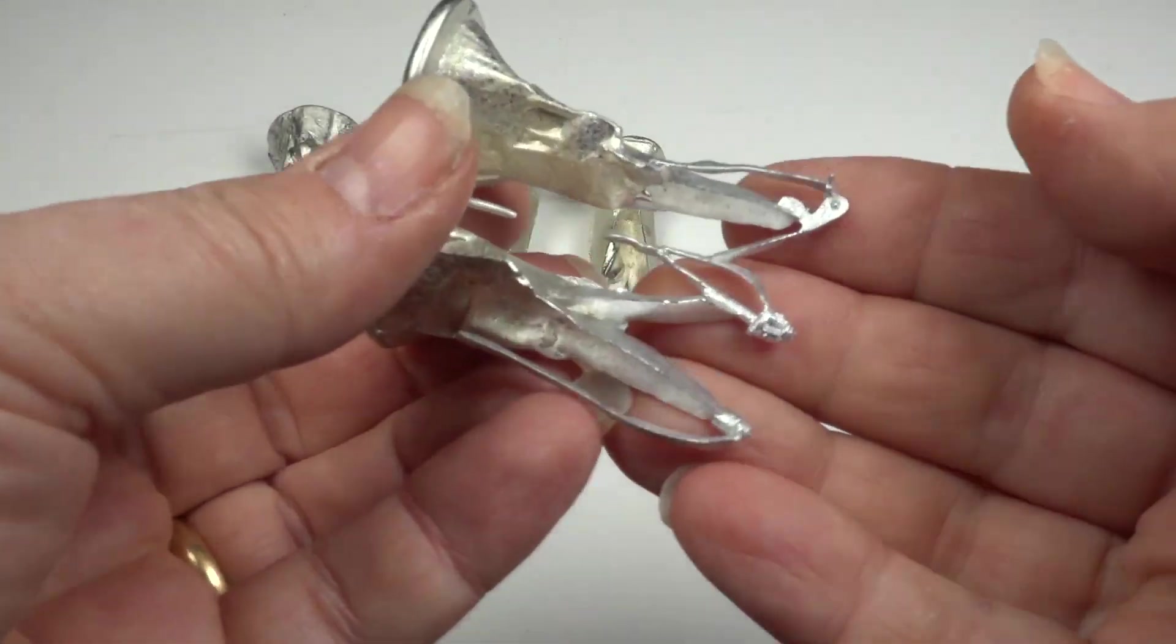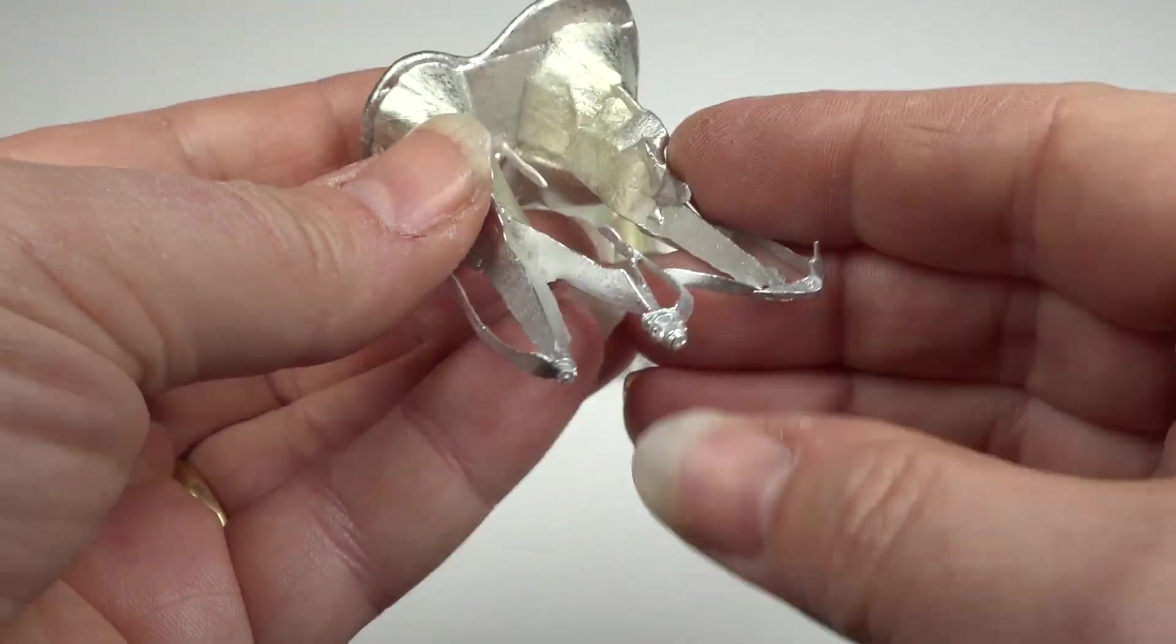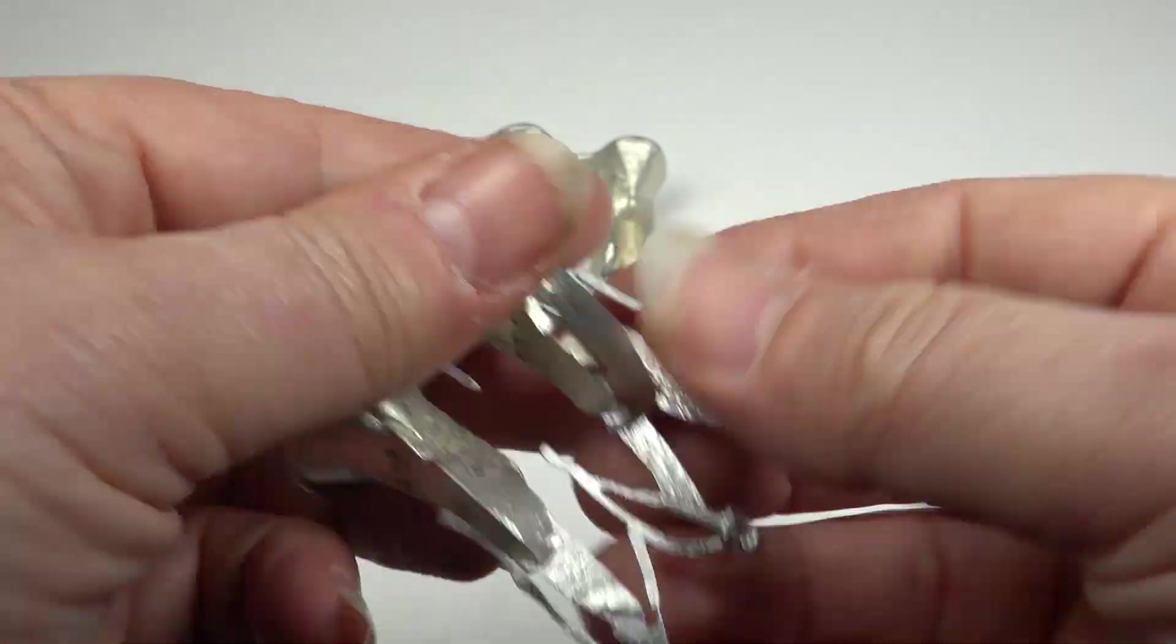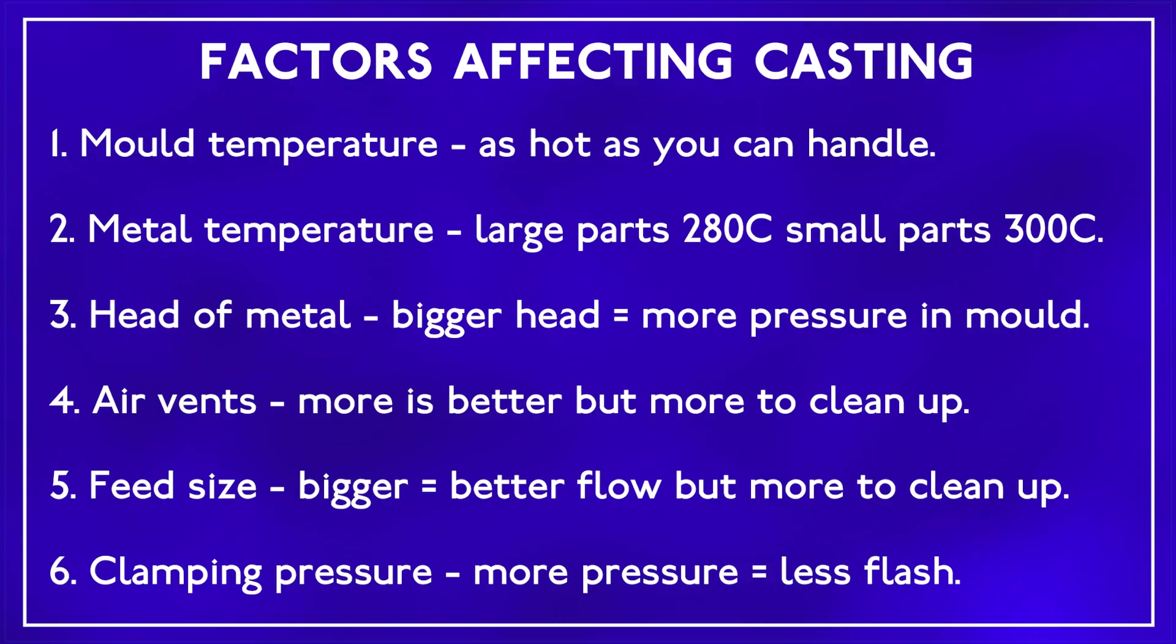You should now have some idea of how the metal behaves and some of the factors that can affect the quality of the castings. Mould temperature, metal temperature, head of metal, air vents, feed size, clamping pressure are all things that you can vary to help your parts cast.